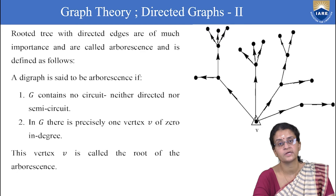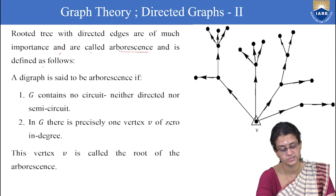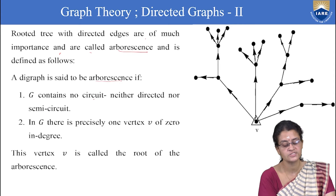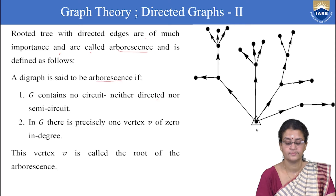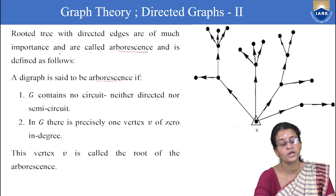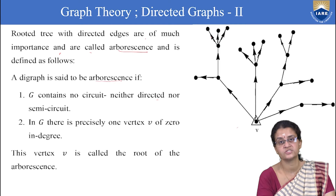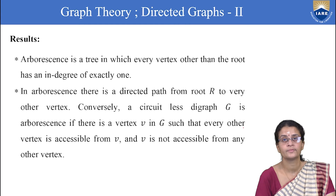We have already seen the rooted tree model. Now in directed graphs, a rooted tree with directed edges is called an arborescence. A directed graph is an arborescence if it contains no circuits — neither directed nor semicircles — and there is precisely one vertex V with zero in-degree. This vertex V is called the root of the arborescence.